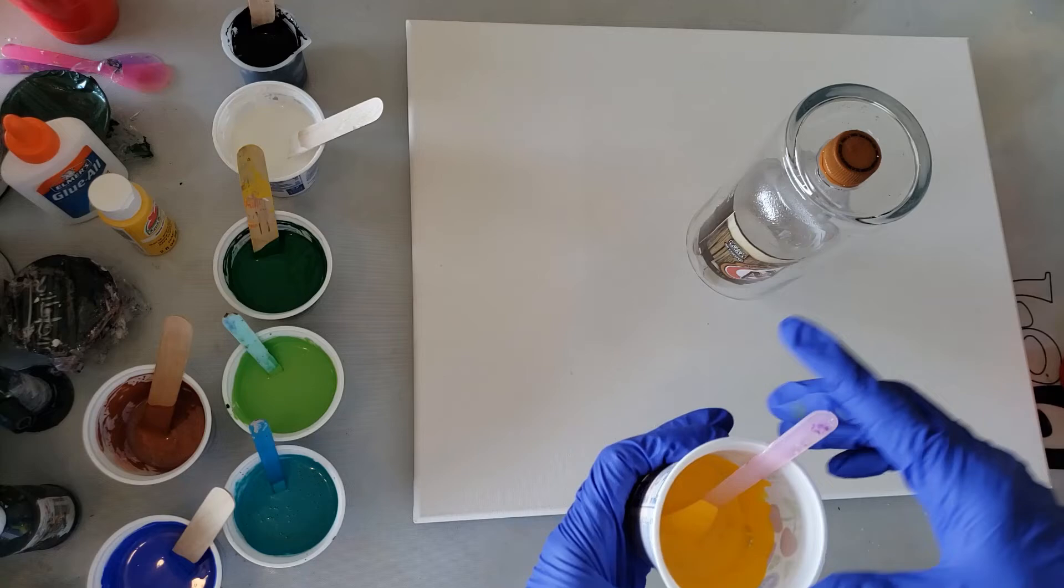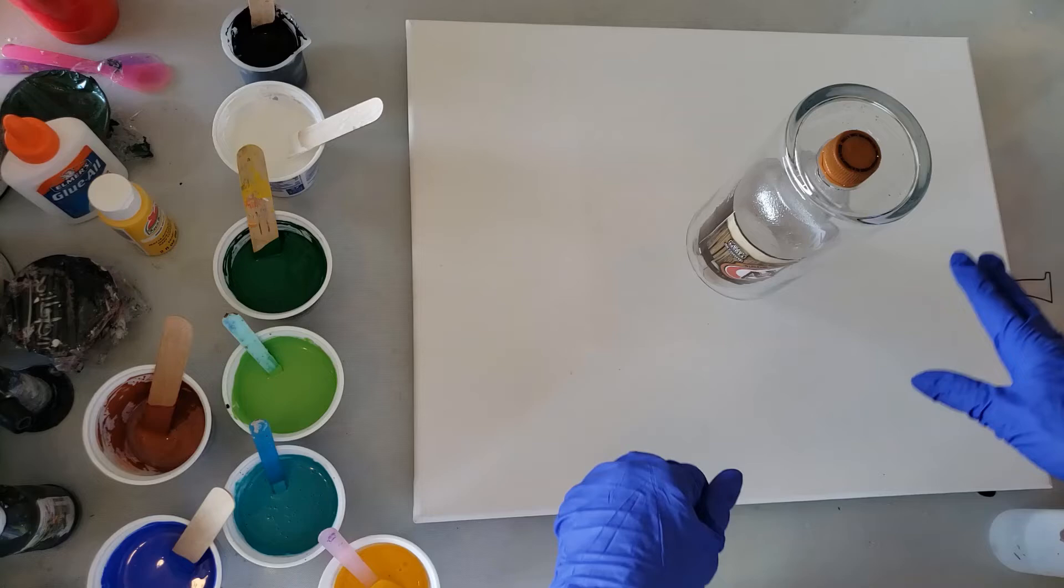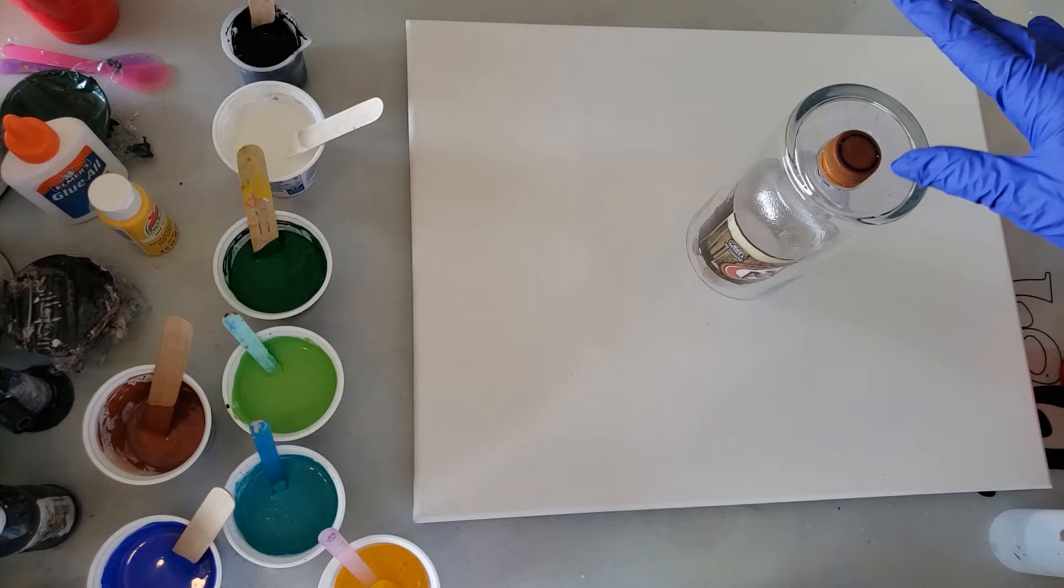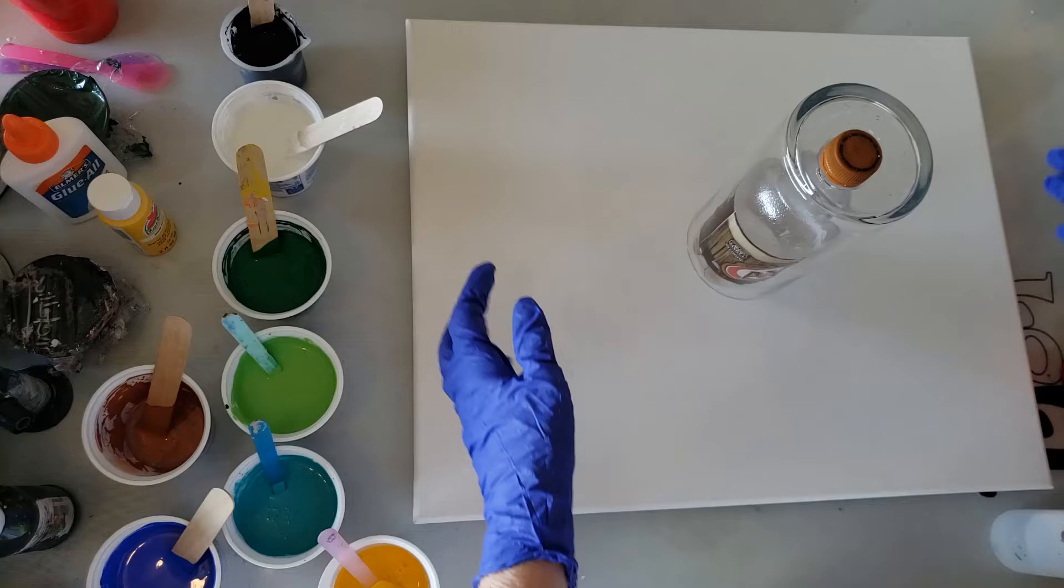Sometimes you need thicker paints for different things, or a little bit thinner for like a Dutch pour. But right now I've got a 16 by 20 canvas. This is the only vase I had left, so I'm going to pour it on top of this and it'll flow down. And then after it stops dripping a little bit, we'll move it off the canvas and then the rest of the paint will go on the canvas. We tilt that and hopefully come out with something beautiful.